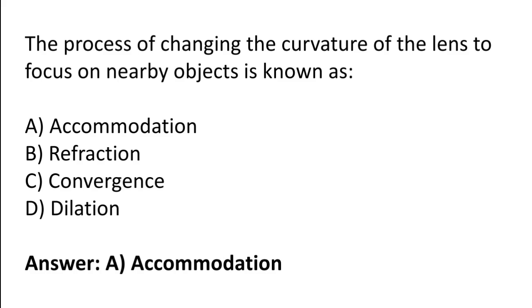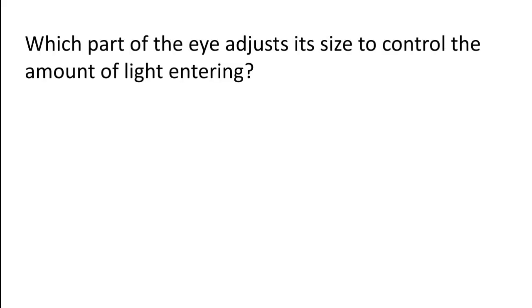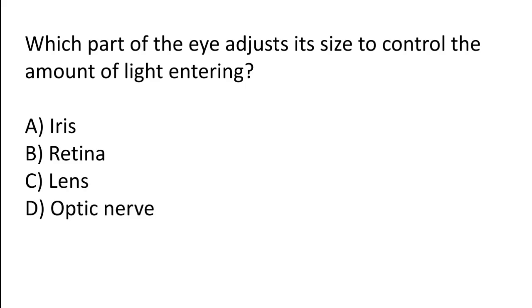Which part of the eye adjusts its size to control the amount of light entering it? Options: retina, lens, optic nerve, or iris. The correct answer is option A — it is the iris that adjusts its size to control the amount of light entering the eye.